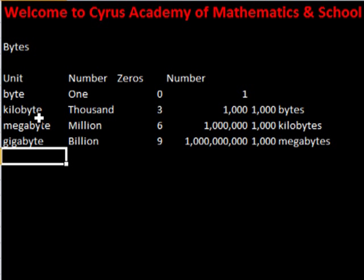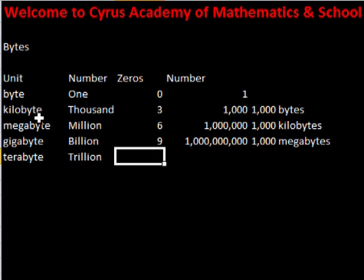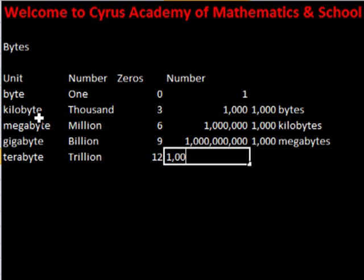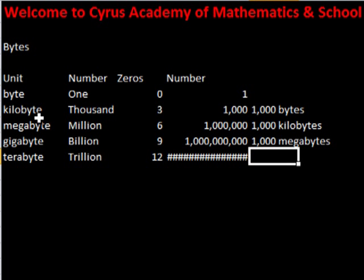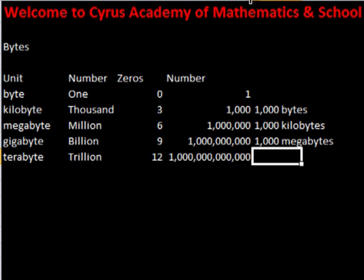Next is a terabyte. It's a trillion. It has twelve zeros. It has a thousand gigabytes in it.